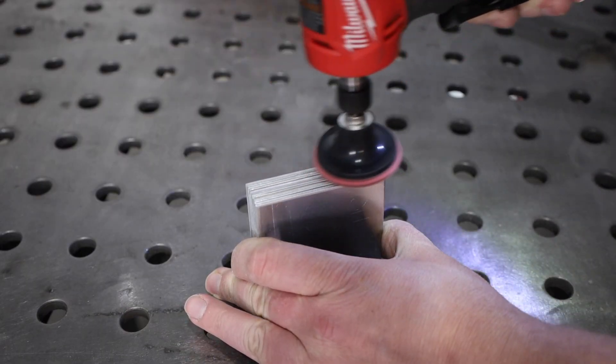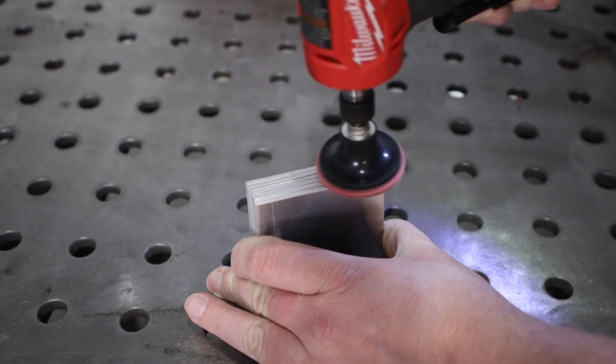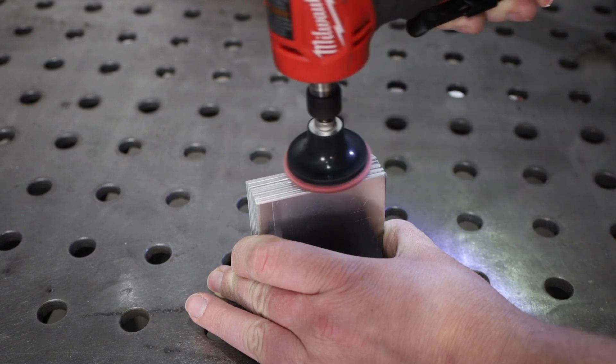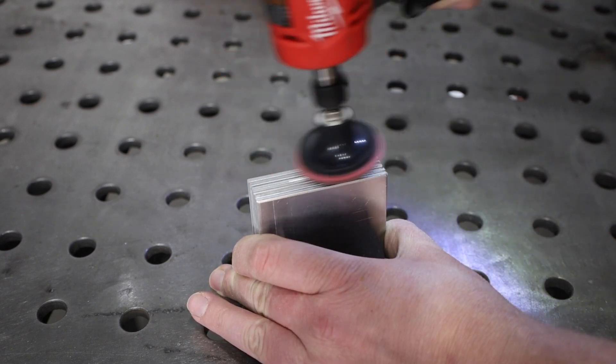I'll just use a scotch-brite pad on a rotary tool. Now, some people have had trouble with wax deposits and things like that off of pads like this. I haven't had a lot of issues, but your results may vary.